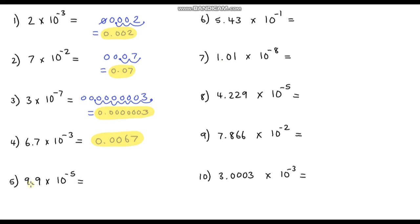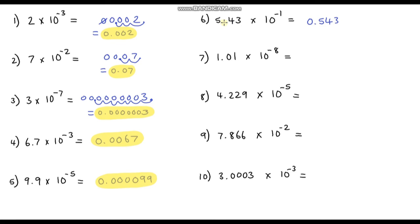Question 5: 9.9 times 10 to the power negative 5. I would expect four zeros after the decimal point, so it's going to be 0.000099. Question 6: 5.43 times 10 to the power negative 1. If we take 1 away from 1 we get 0, so there are no zeros after the decimal point — it's just 0.543, because all we're doing is moving our decimal point one place to the left, directly in front of our 5.